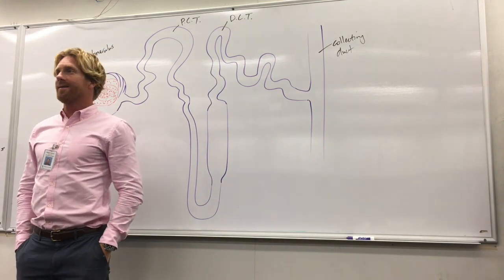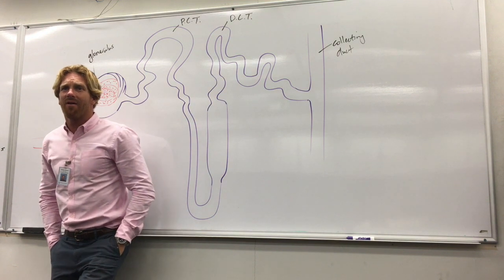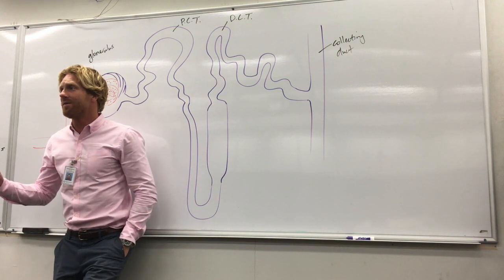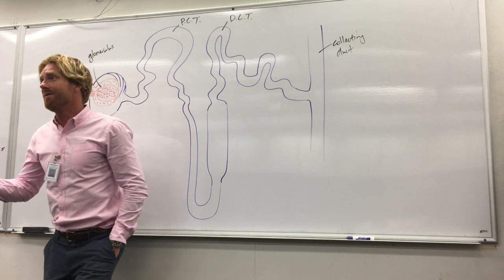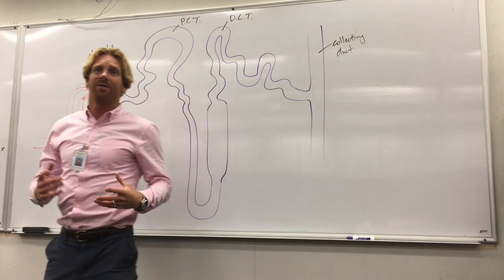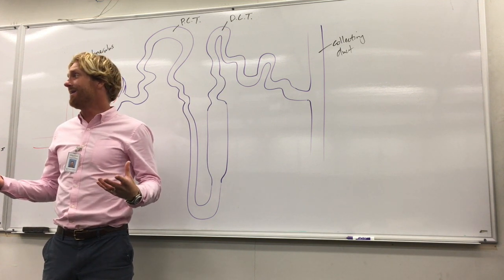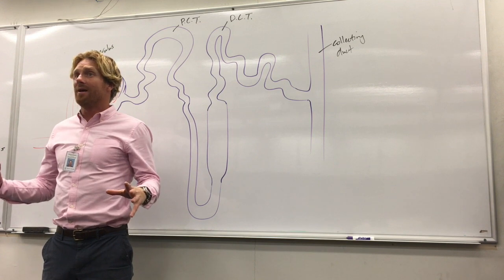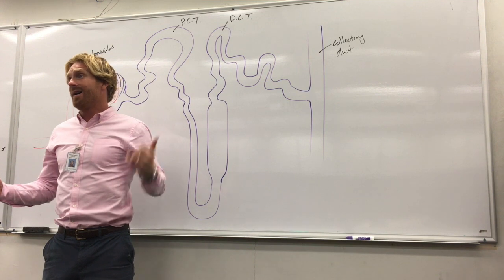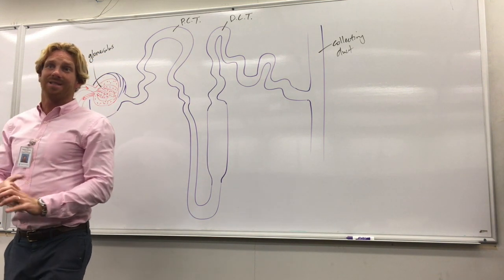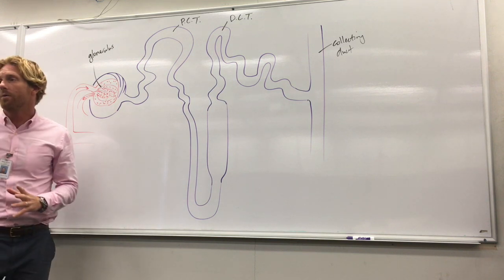What I'd like to do today is talk about how the nephron is able to produce concentrated urine. When we're dehydrated, the kidney needs to hold on to as much fluid as possible — the last thing we need is to lose more fluid. This process of concentrating the urine and reabsorbing water occurs in the nephron, specifically in the collecting duct.